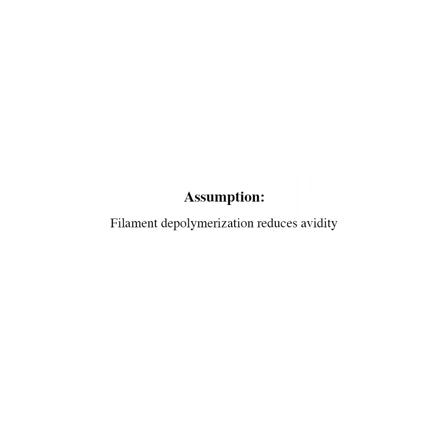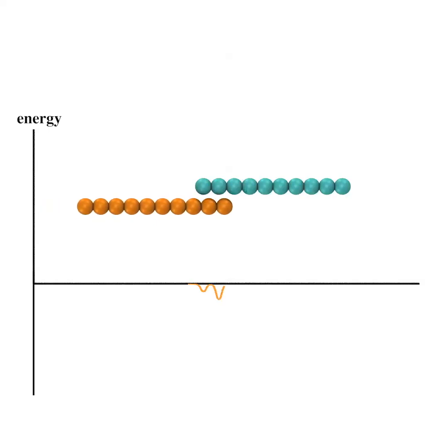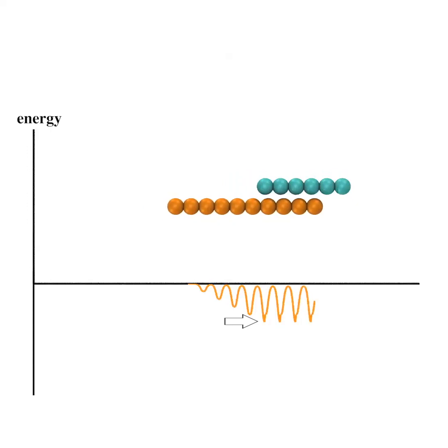Next, we assume that filament depolymerization can reduce avidity to allow further sliding. In this mechanism, filament depolymerization occurs together with sliding to maintain a short filament overlap and low energy barrier, therefore sustaining filament sliding.